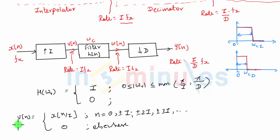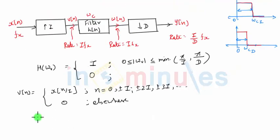V(n) represents upsampled output signal by a factor capital I. The output of the low pass filter is W(n), which will be nothing but convolution between V of n and H of n.